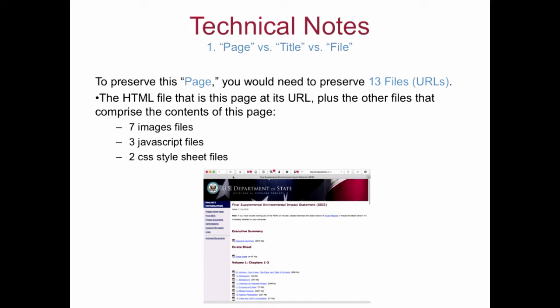Here is a picture of its webpage. If we wanted to preserve this page, we would need to preserve 13 files with 13 unique URLs. That includes the HTML file that links this page and its URL, plus the other files that comprise the content of the page — seven image files, three JavaScript files, two stylesheet files. But if what we want to preserve is the title — the environmental impact statement itself — we'd need to preserve 94 separate PDF files that comprise the 11 volumes and all the parts of the EIS, and we could do that without preserving the HTML or JavaScript files.